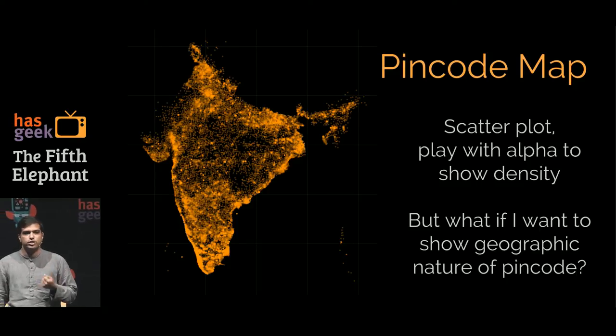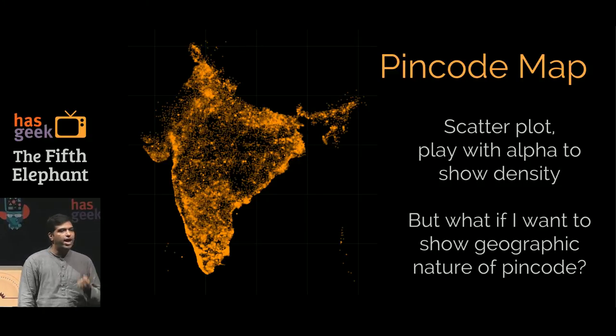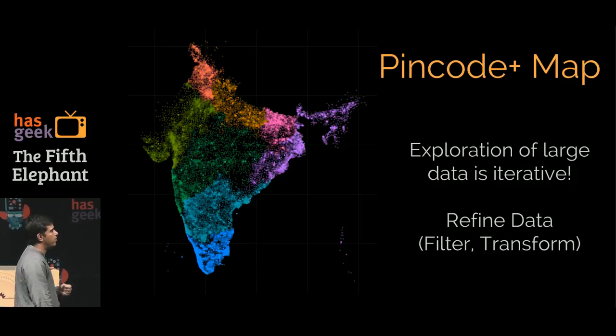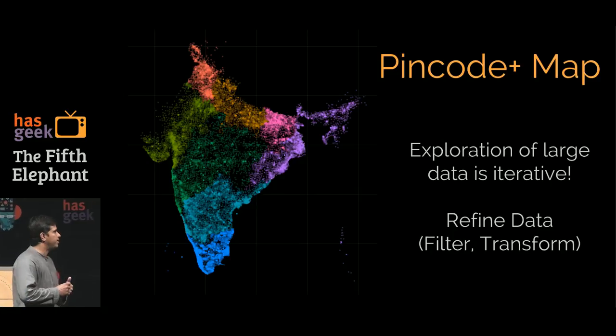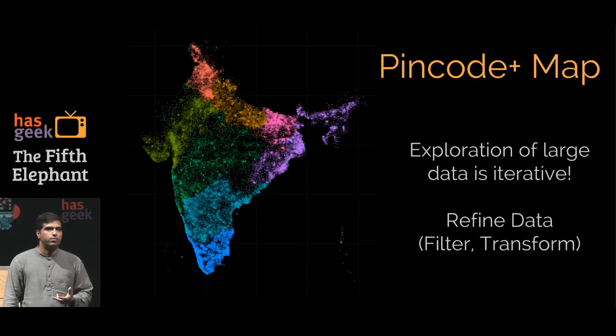I can create these visualizations very simply, but what I normally do is not create one visualization with a large data set, I create many. For example, I may want to look at is there a geographic nature of the pin code. Does the 5 in 560076 stand for something? If you want to look at that, then I would just color-code the first digit. And I would now look at, yes, the 5 actually stands for two states, Karnataka and the erstwhile contiguous Andhra Pradesh. Exploration of large data is actually an iterative process.